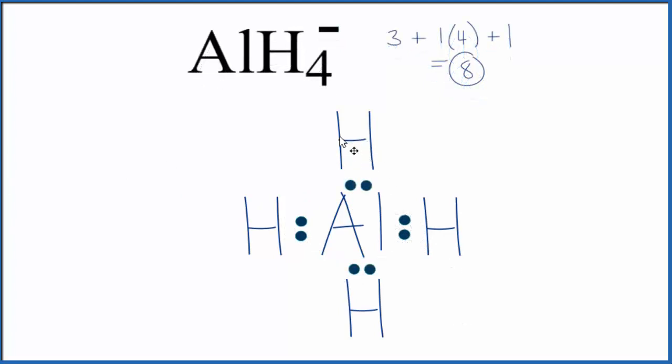So hydrogen only needs two valence electrons to have its outer shell full. So all the hydrogens are good. The aluminum in the center, that has eight. So that's okay like that.